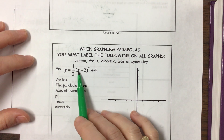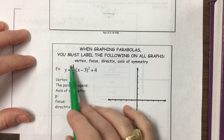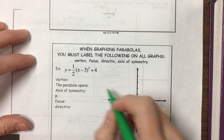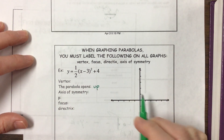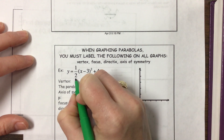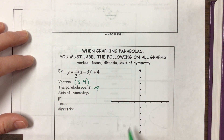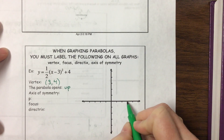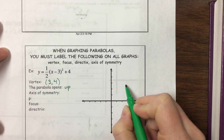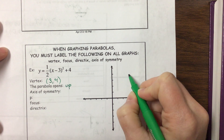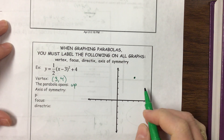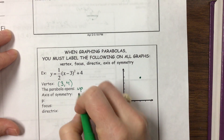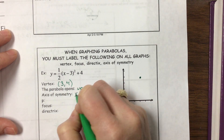On this first example, notice that x is getting squared and the value out front is positive, so the parabola is opening up. The vertex is going to be hk, which is (3, 4). The axis of symmetry, since it's opening up, is x equals 3.